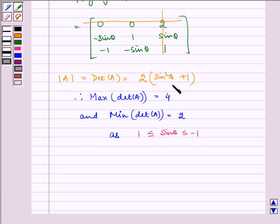Here we can see that if sin²θ = 1, then value of determinant A will be 4. So maximum is 4.